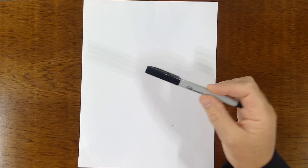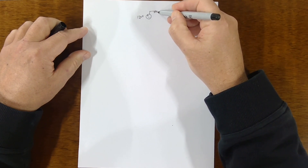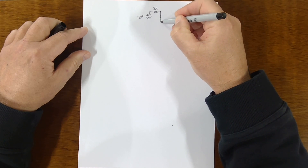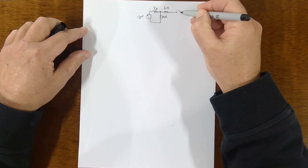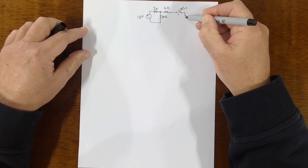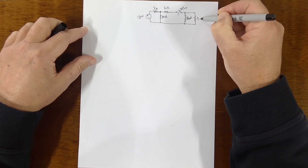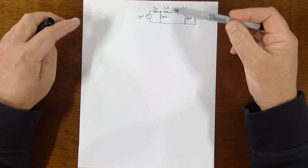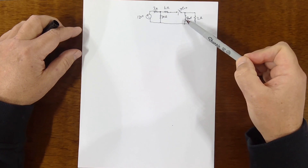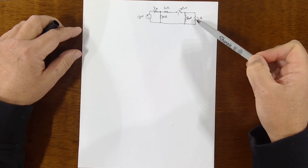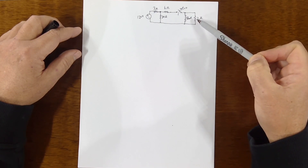This is a natural response of an RL circuit. We have a 120 volt source, a 3 ohm resistor, a 30 ohm resistor, a 6 ohm resistor, and then there's a switch that opens at T equals zero, connected to an 8 millihenry inductor and a 2 ohm resistor. The left side of the circuit is the energizing part — it energizes the inductor with a current. Then the circuit opens and the inductor discharges its energy to the 2 ohm resistor as heat.